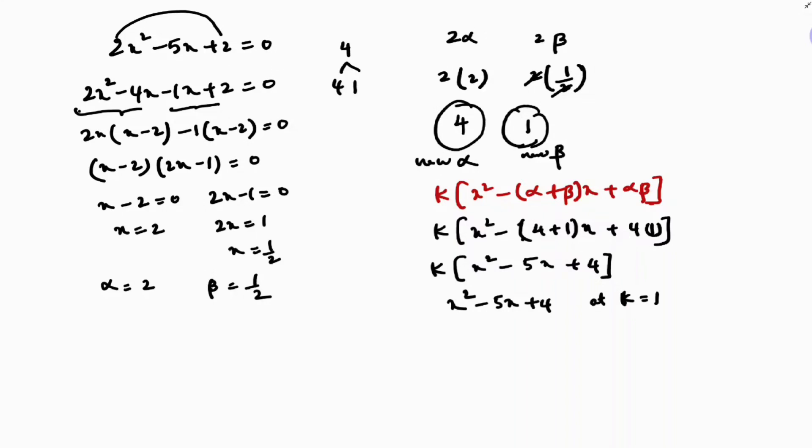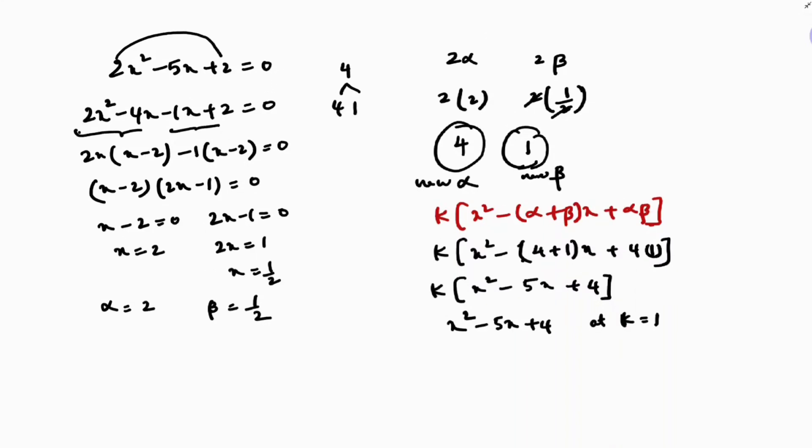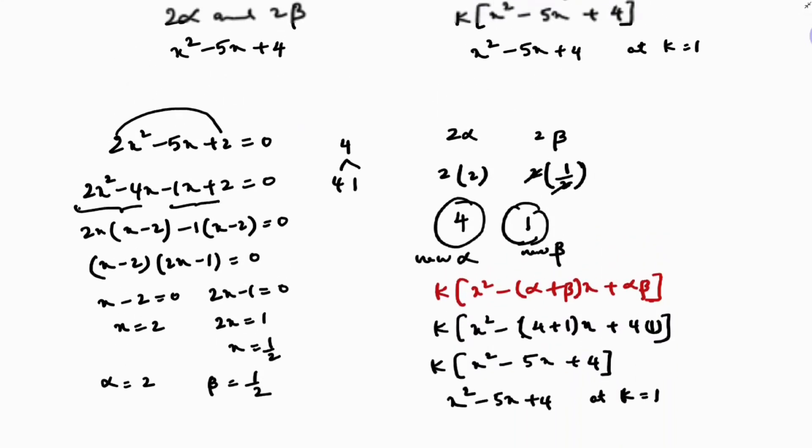So in this way, we can find the solution for this question in two different ways, both giving x squared minus 5x plus 4.